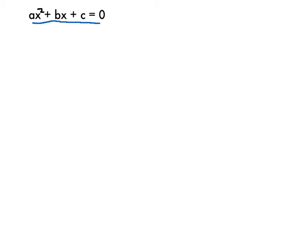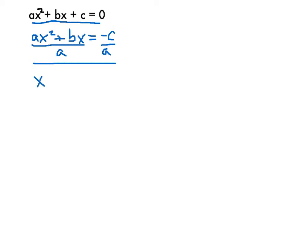If we can just solve this for x using a, b, and c, then it doesn't matter what a, b, and c are — we'll have a formula we can plug into. I'm going to complete the square, and I'll first start by subtracting over the c. So I'll have ax² + bx equal to the opposite of c. Now I'm going to divide both sides by a, because I need to get rid of the number in front of x². So I'll have x² + (b/a)x equal to −c/a.